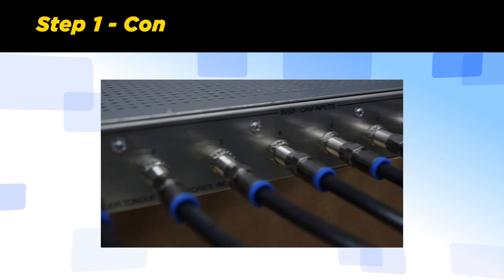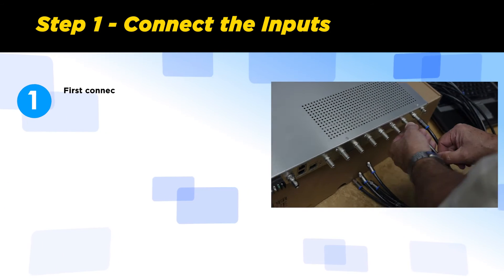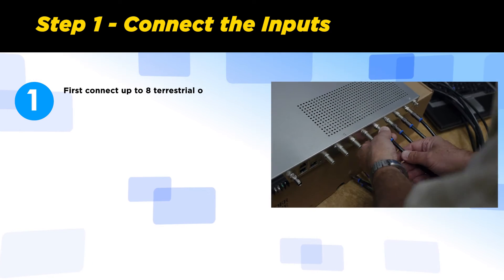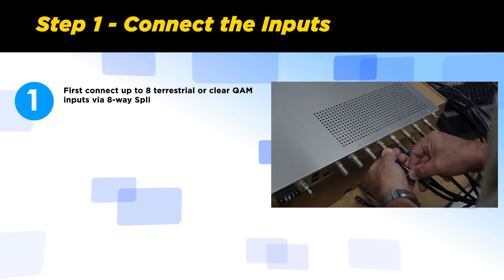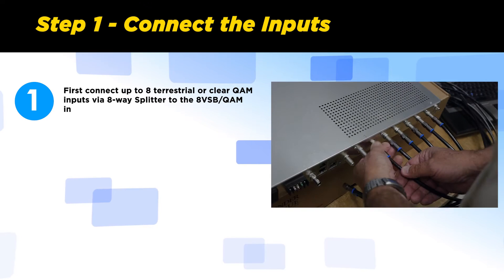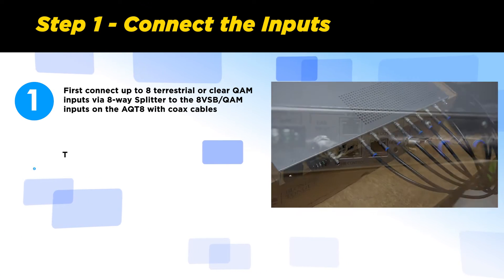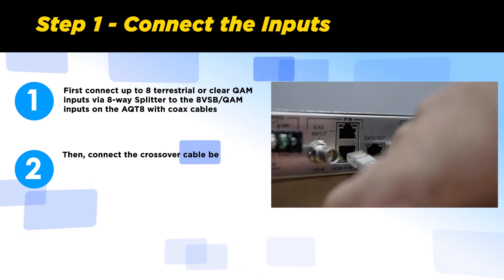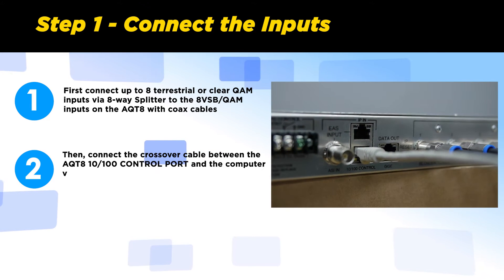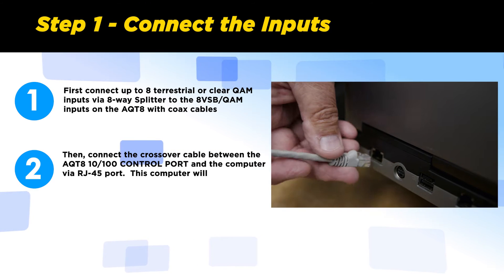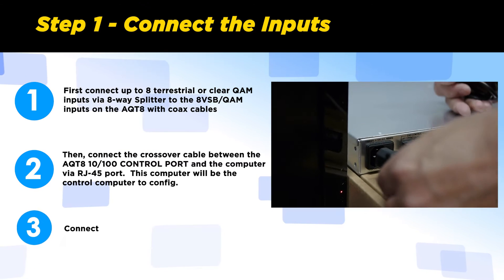Step 1: Connect the inputs. First, connect up to 8 terrestrial or clear QAM inputs using the 8-way splitter to the 8 VSB QAM inputs on the AQT8 with coax cables. Then connect the crossover cable between the AQT8 10/100 control port and the computer via the RJ45 port. Connect the power cord.